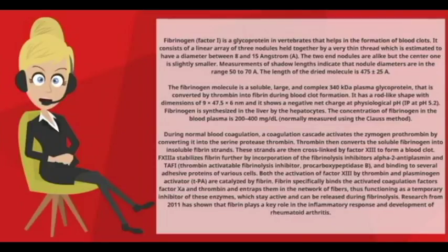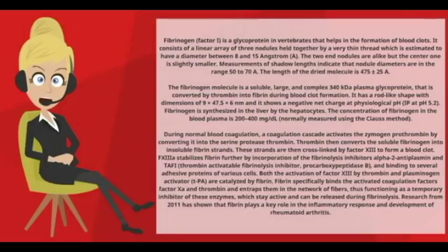During normal blood coagulation, a coagulation cascade activates the zymogen prothrombin by converting it into the serine protease thrombin. Thrombin then converts the soluble fibrinogen into insoluble fibrin strands. These strands are then cross-linked by factor XIII to form a blood clot.